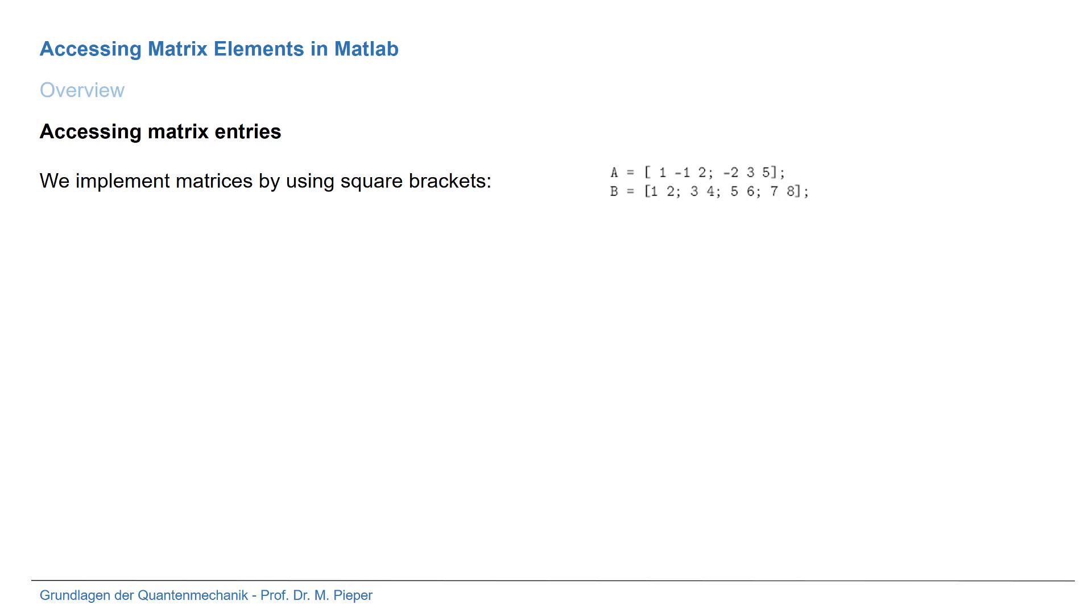If we implement matrices then we use square brackets as shown in the example here. If you want to access entries in matrices, then we use round brackets.